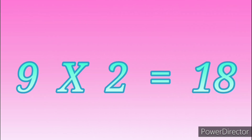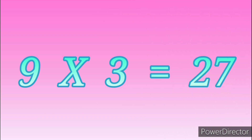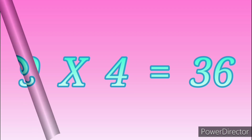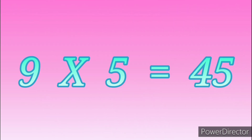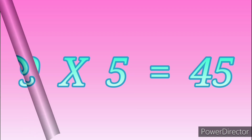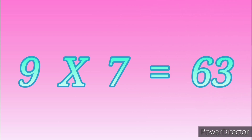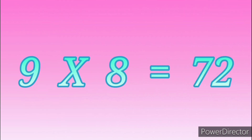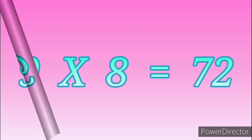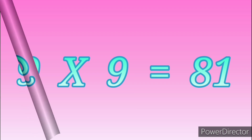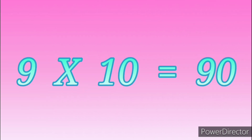Table of Nine: 9 ones are 9, 9 twos are 18, 9 threes are 27, 9 fours are 36, 9 fives are 45, 9 sixes are 54, 9 sevens are 63, 9 eights are 72, 9 nines are 81, 9 tens are 90.